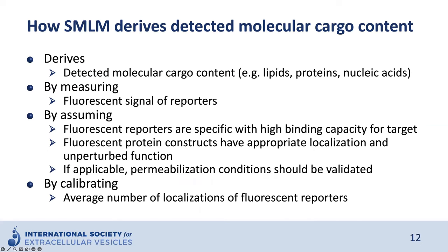The real advantage of SMLM is that it can also provide molecular cargo content by measuring the fluorescent signal of reporters. Fluorescent reporters that detect molecules of interest need to be specific and have high binding capacity. If the affinity reagent does not bind to the target, we will not detect the target; if it binds non-specifically, we will detect artifacts. If genetically labeled constructs are used, they need to have appropriate biological localizations and unperturbed function. For luminal cargo, permeabilization conditions should also be evaluated. In SMLM, fluorescent reporters blink, so we need to evaluate the average number of localizations of these reporters to accurately determine the detected number of cargo molecules.